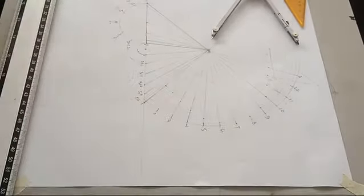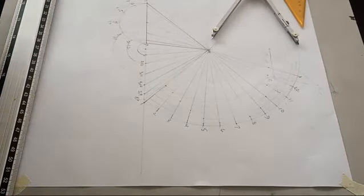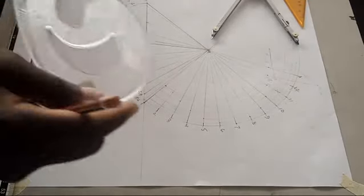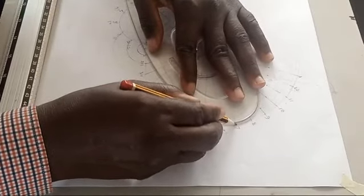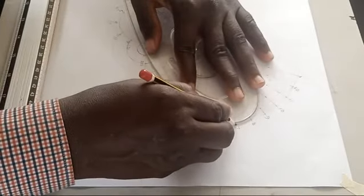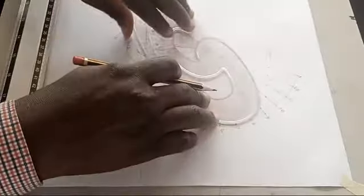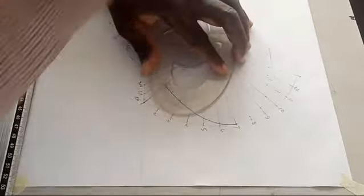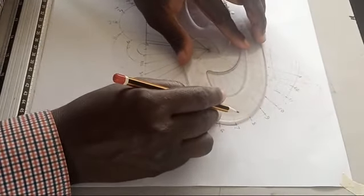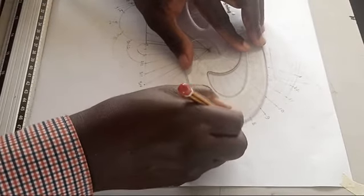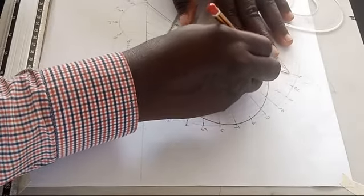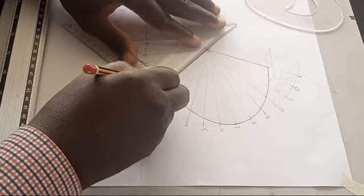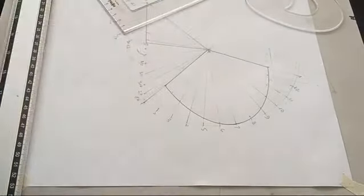Now you can join all the located points using a French curve. We use a French curve because a cone has a smooth curved surface. Place the French curve against the points, turn it as needed for the other side, and complete the development. You can now write 'development' to label this view.